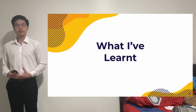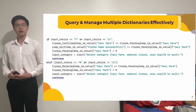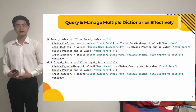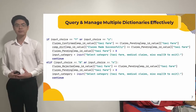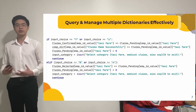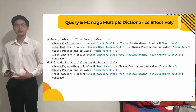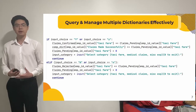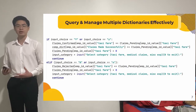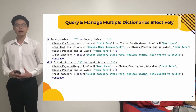What I've learned from this project is, first, how to query data from dictionaries effectively and manage multiple dictionaries altogether. For example, upon the approval of claims, there are interactions among three different dictionaries: the claims pending, claims confirmed, and the claims made successfully. The claims pending will be added to the claims confirmed, and the claims pending will then be cleared. Thereafter, the claims made successfully will also be updated.